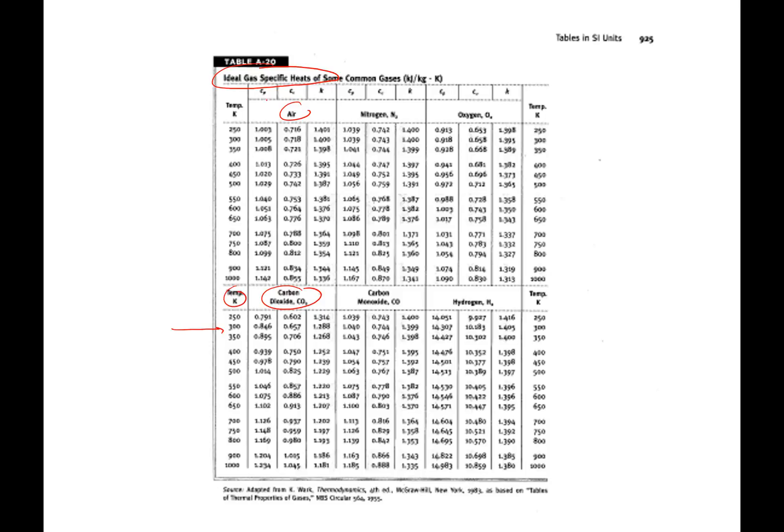So there's a value there. The one we need is not Cp. We need Cv. At 300, the specific heat is 0.657. And the units are kilojoules per kilogram per kelvin. You must carefully read the caption to figure out what units you've got.